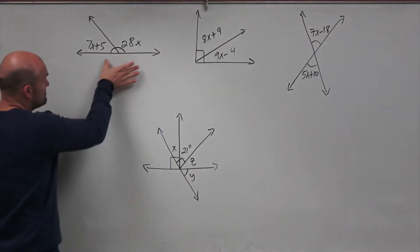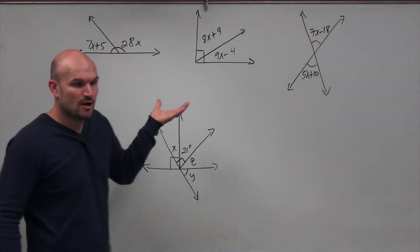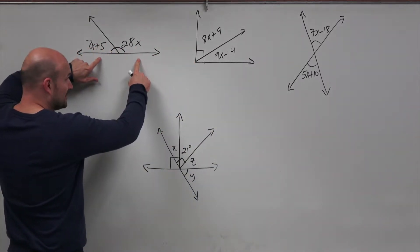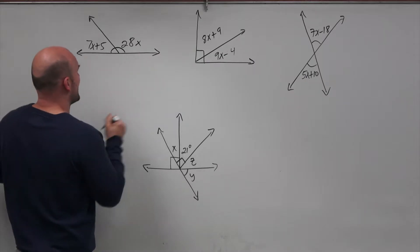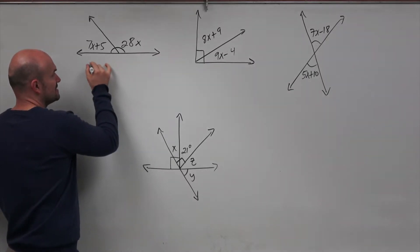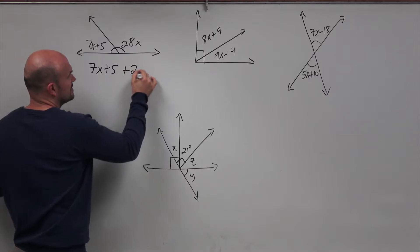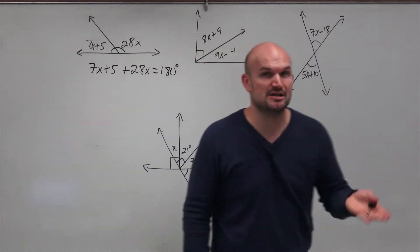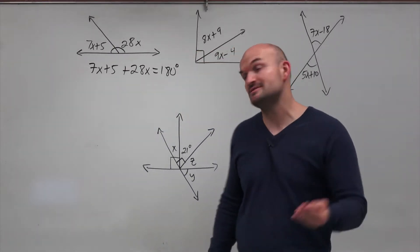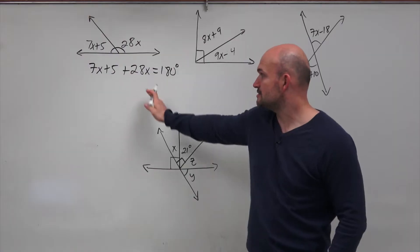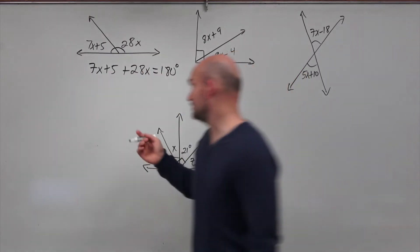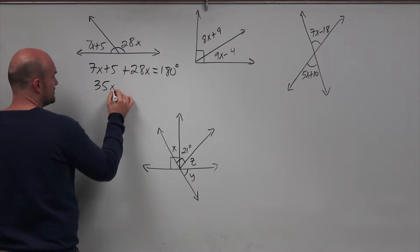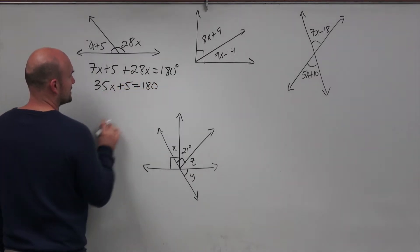So if I need to find the measure of these two angles, or at least solve for x, what I need to do is create an equation. If I know these two angles are supplementary — a linear pair, therefore supplementary — that means they add up to 180 degrees. So I can say 7x + 5 + 28x = 180 degrees. Now I combine like terms on the left-hand side: 7x + 28x = 35x, so 35x + 5 = 180 degrees.